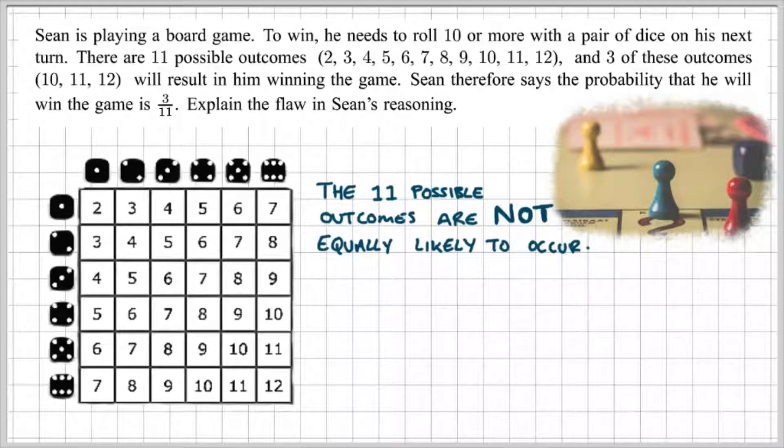So think about it. 2 can only occur once, whereas 8 can occur 1, 2, 3, 4, 5 times. So the 11 possible outcomes are not equally likely.